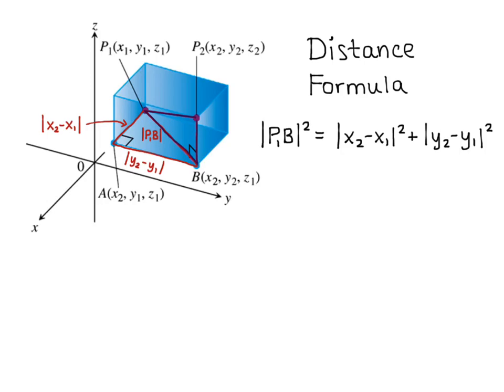Now let's look at the triangle P1, B, P2. The hypotenuse of this triangle is the line segment P1P2, and the vertical leg is |Z2 − Z1|. The other leg is the distance between P1 and B, which we already found using the Pythagorean Theorem on the first triangle. So applying the Pythagorean Theorem again: |P1P2|² = |P1B|² + |Z2 − Z1|².